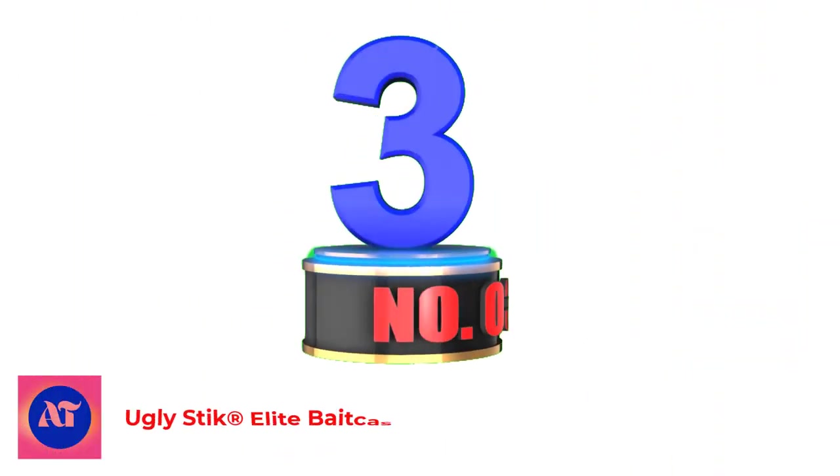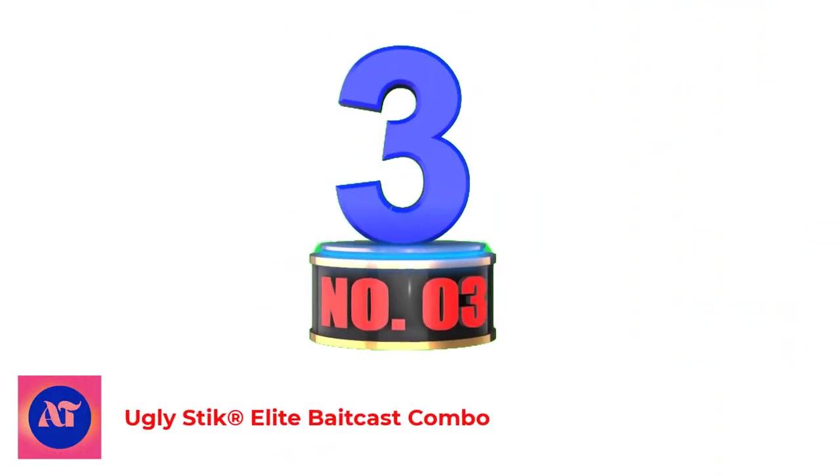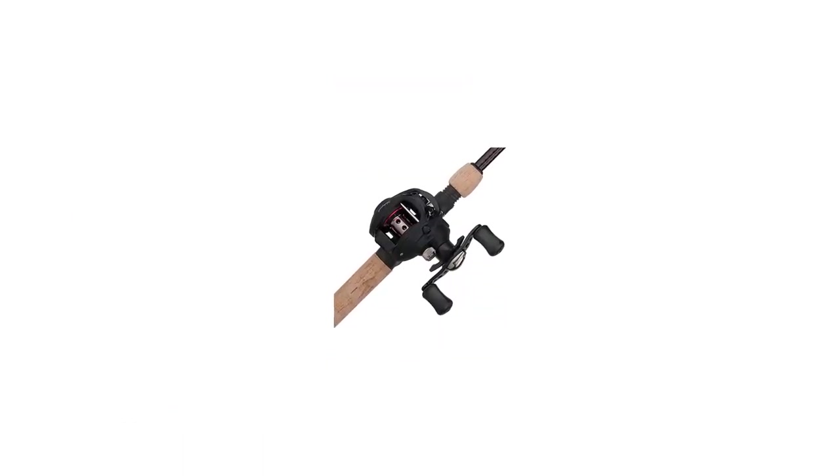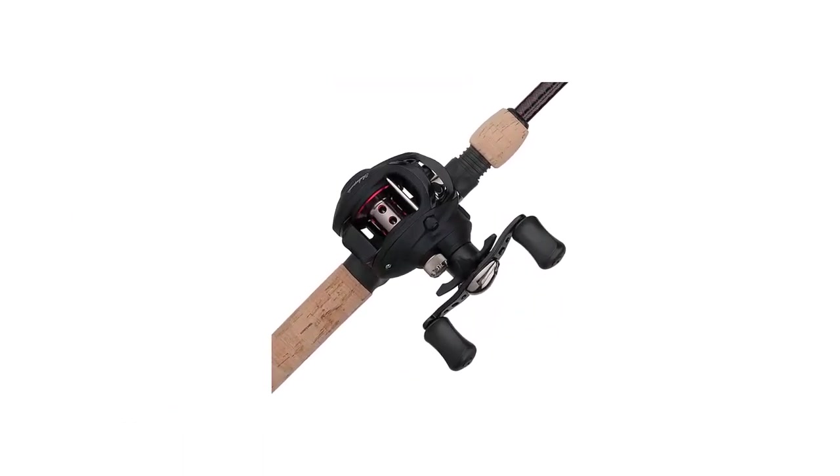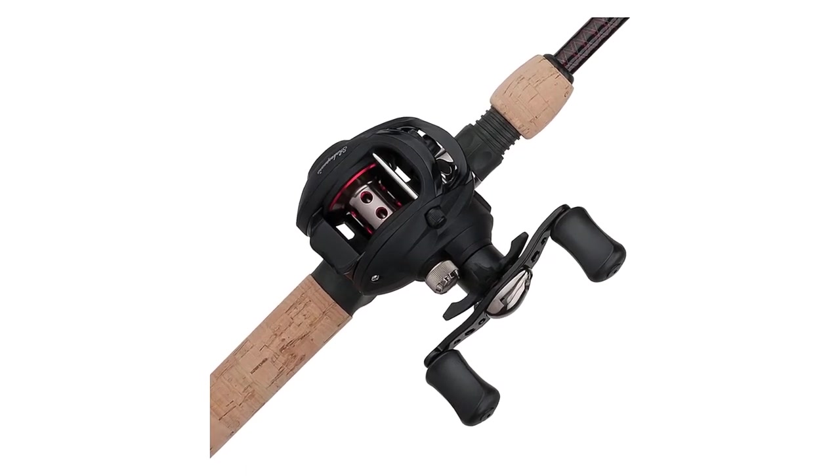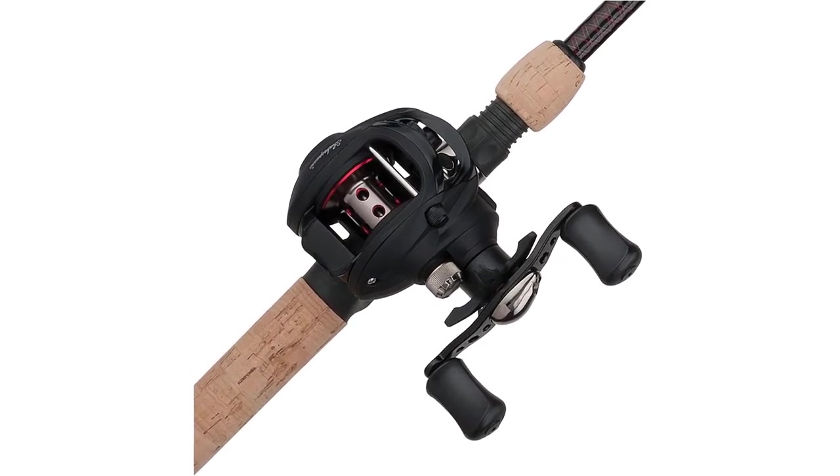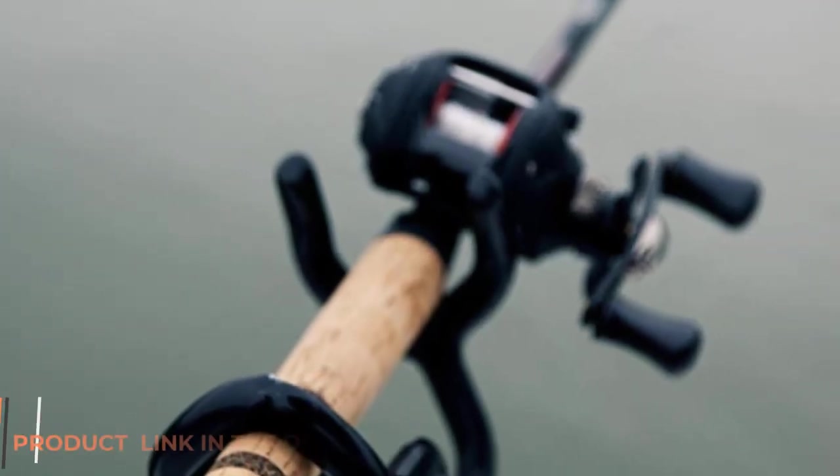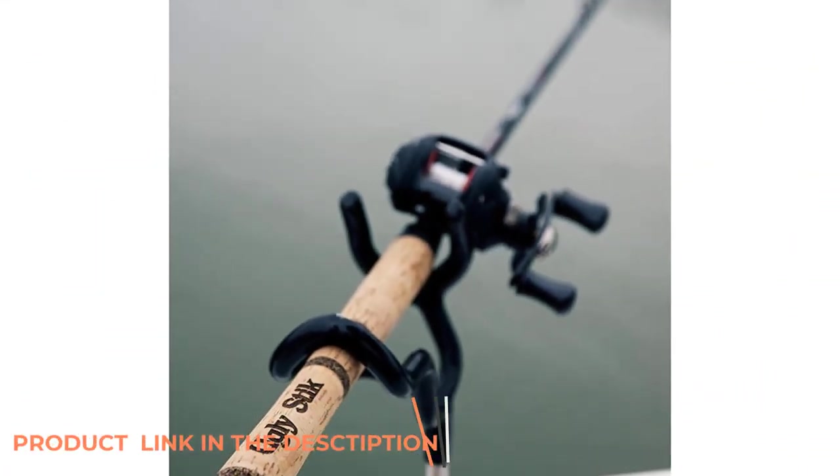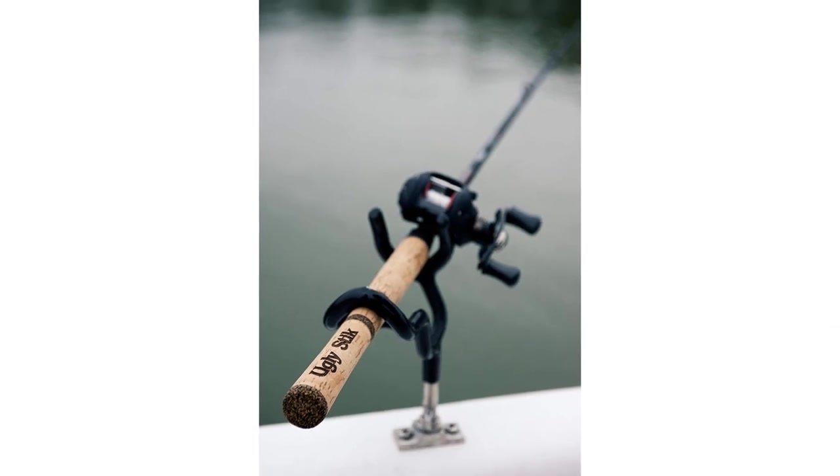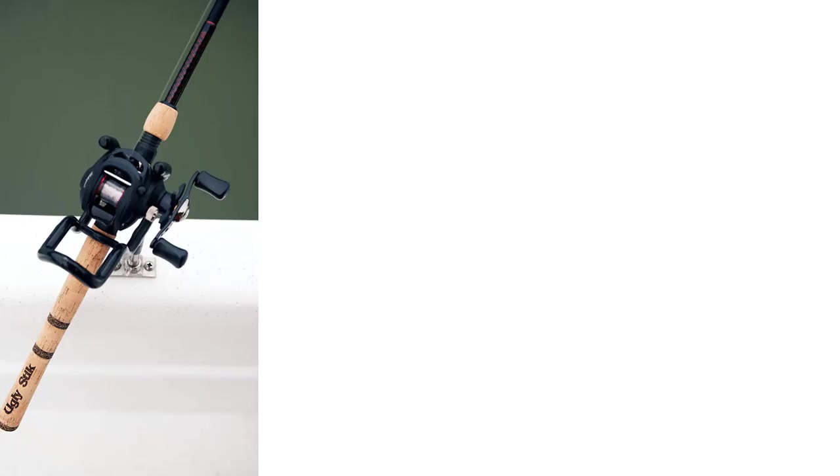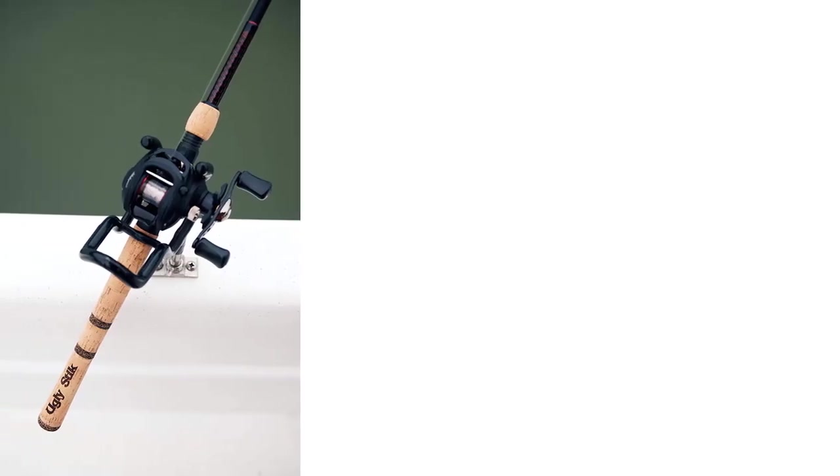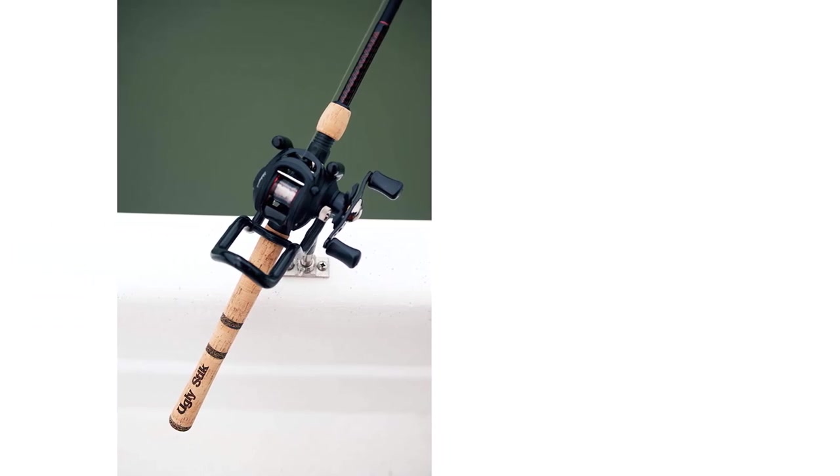Number 3. Ugly Stik Elite Bait Cast Combo. The reel here you get a one-ball bearing reel, which is admittedly not great in terms of ball bearings. Yes, it is smooth enough, but it could definitely be smoother. It already comes pre-spooled with 12-pound line, although it cannot fit very much of it. It can hold 150 yards of 10-pound mono line, which is alright, but once again, not great. It comes with an adjustable magnetic cast control system, which is pretty cool.